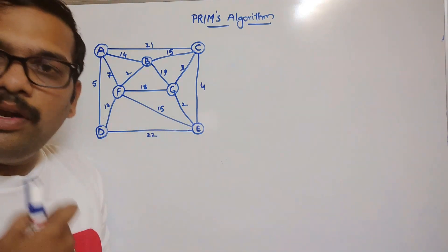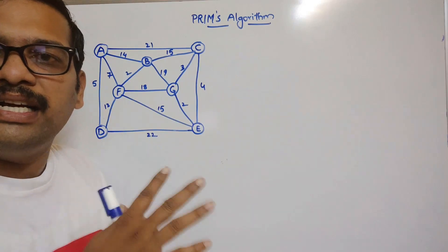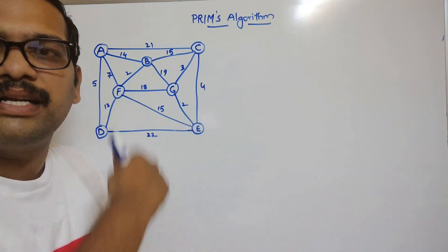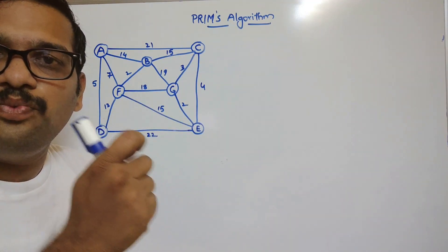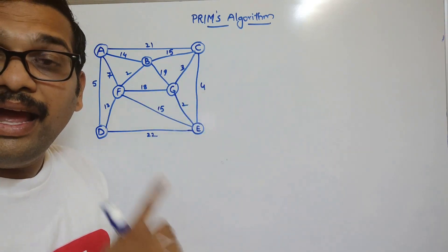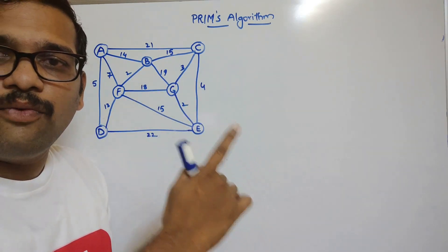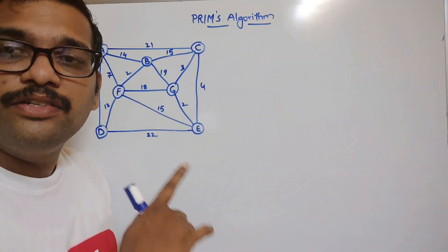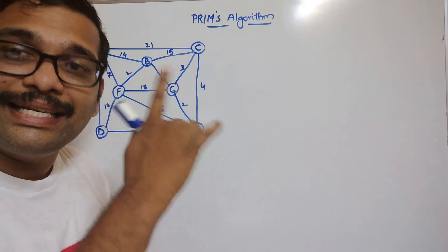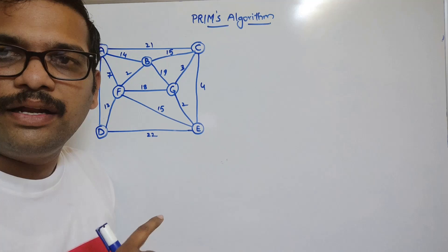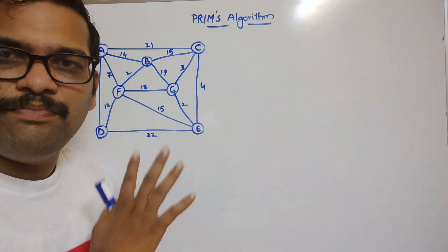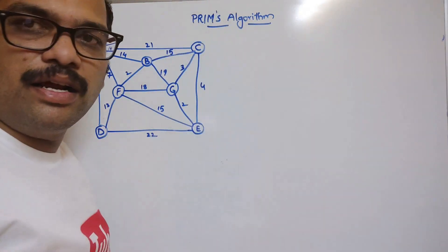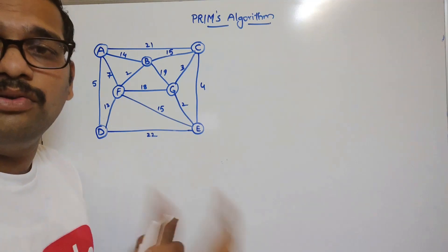Just recalling the steps: the first step, we can consider any vertex. The second step, we need to find out all the outgoing edges from that vertex to new vertices and consider the least weighted edge and include it in the tree. After including the least cost edge, if it forms a cycle we have to discard it and go for the next least weighted edge. We repeat the same thing until all vertices are included. This is Prim's algorithm.